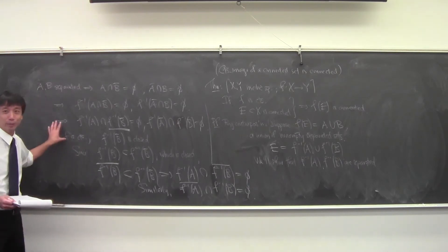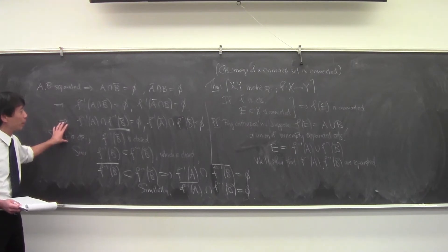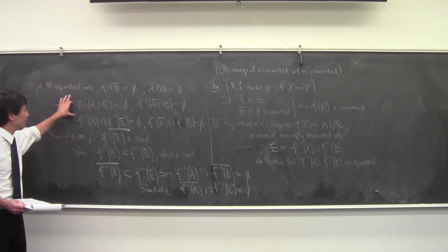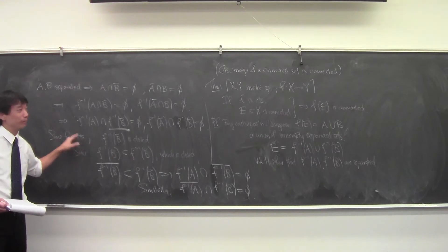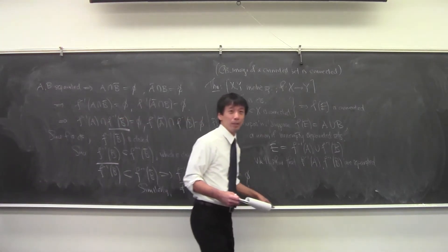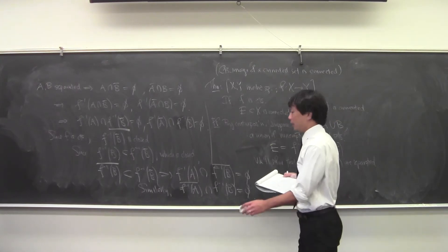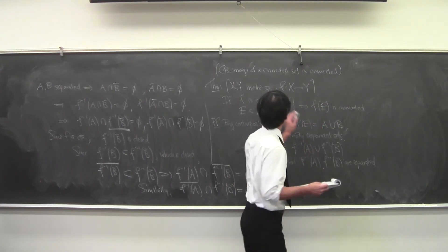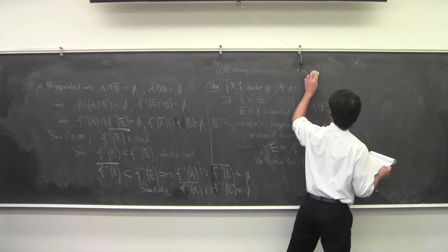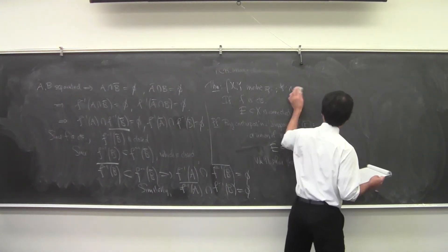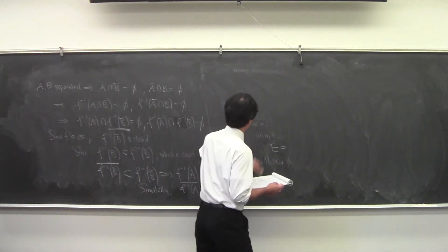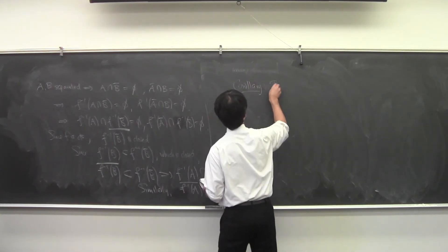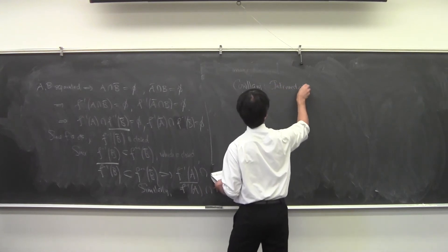This is not a particularly exciting proof. All we're using is continuity — some simple set-theoretic facts, then we use continuity, and that's it. The corollary is the intermediate value theorem.